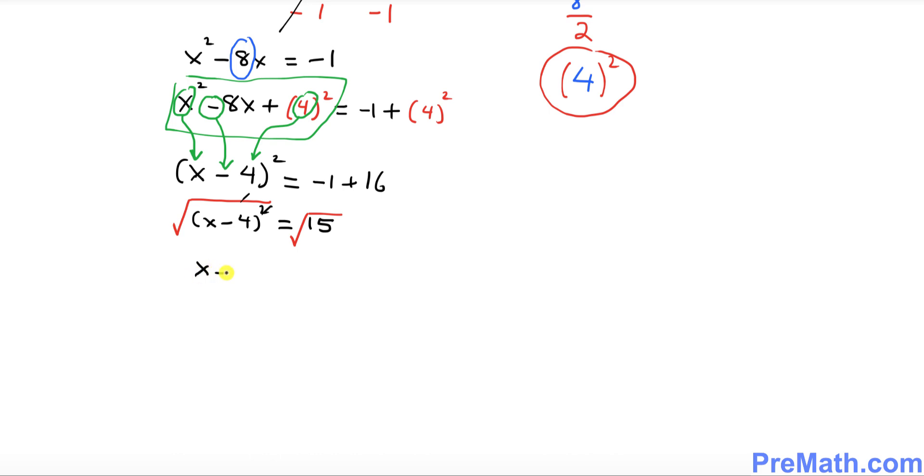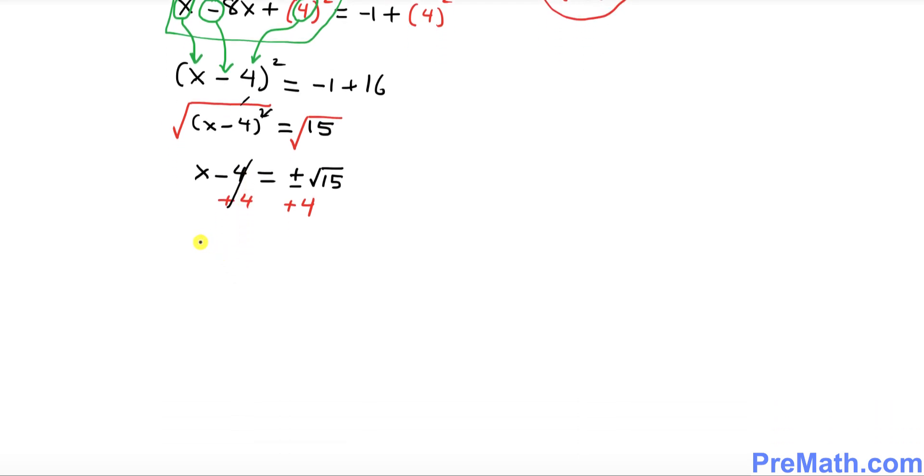So we ended up with x minus 4 equal to plus or minus square root of 15. Now since we're going to isolate x, we have to add 4 on both sides, so this negative and positive 4 are gone. We simply ended up with x equal to 4 plus or minus square root of 15.